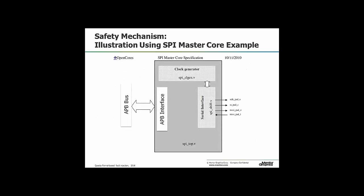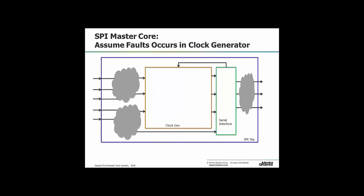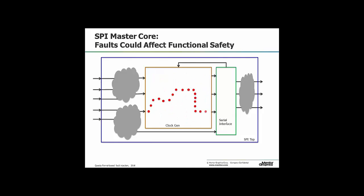We're going to use an illustration — an SPI open core SPI master — which was the basis of the paper at DVCon. We have three main blocks: an AHB interface, a serial interface, and at the top a clock generator. It's the clock generator we're interested in. We're going to assume there are faults in the clock generator, and what we don't want is a fault propagating through the block, out of the outputs, through other logic, and to the outside world affecting the functional behaviour of the design.